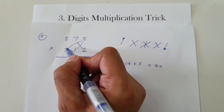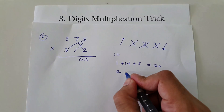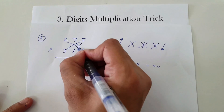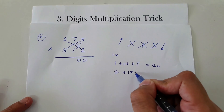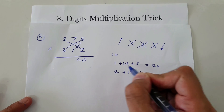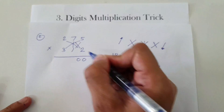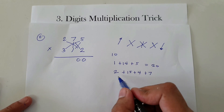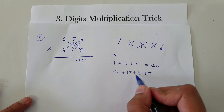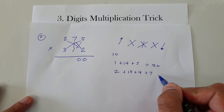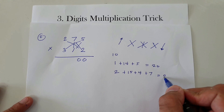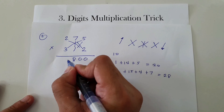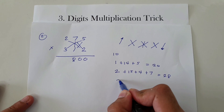Crossbar: 5 times 3 is 15, and 2 times 2 is 4, and 7 times 1 is 7. So let's add 2 plus 15 plus 4 plus 7, that is 28. So we're going to have 8 here and carry 2.